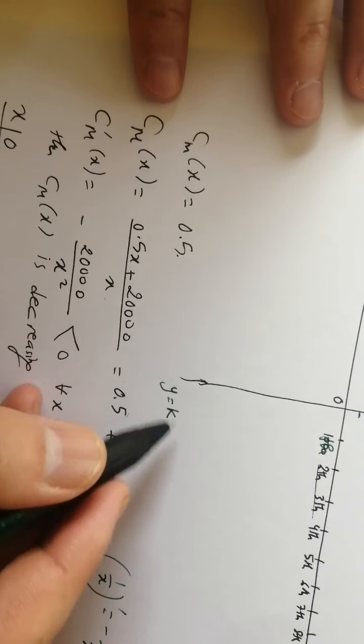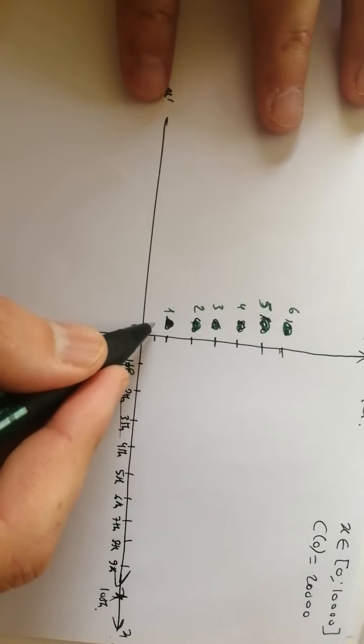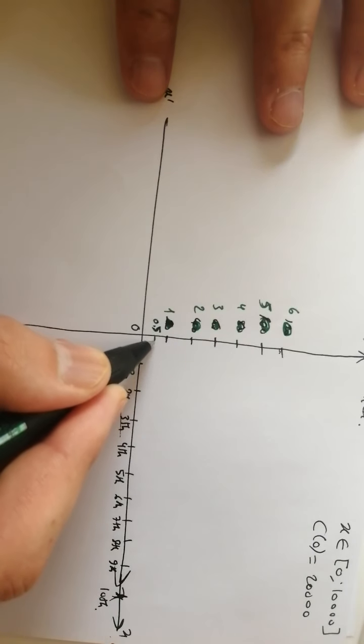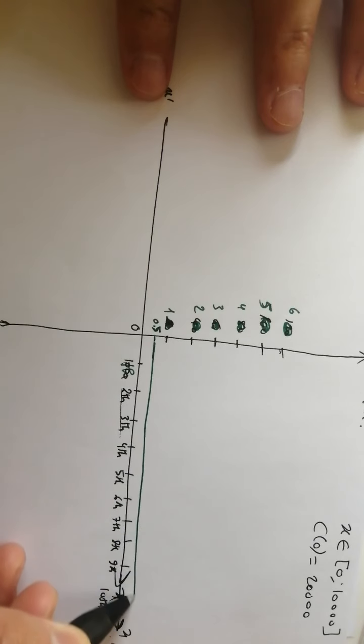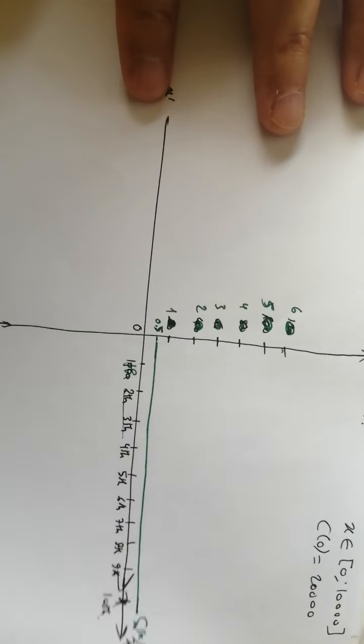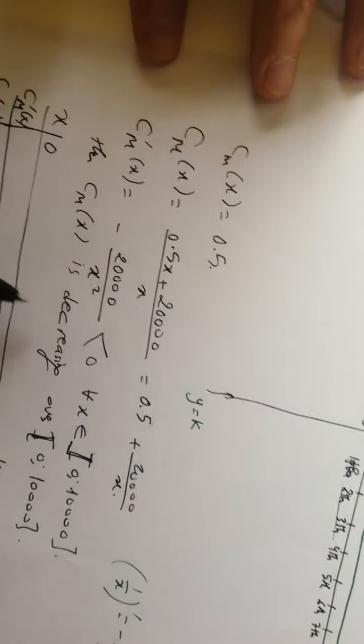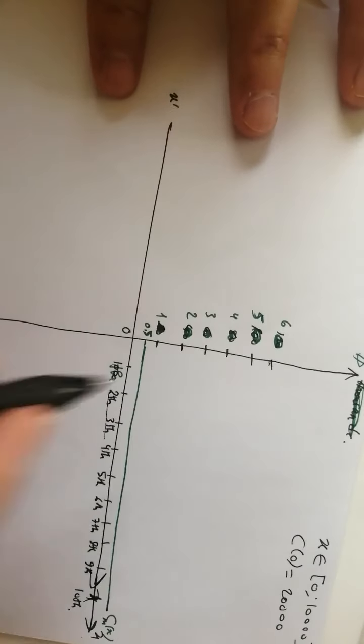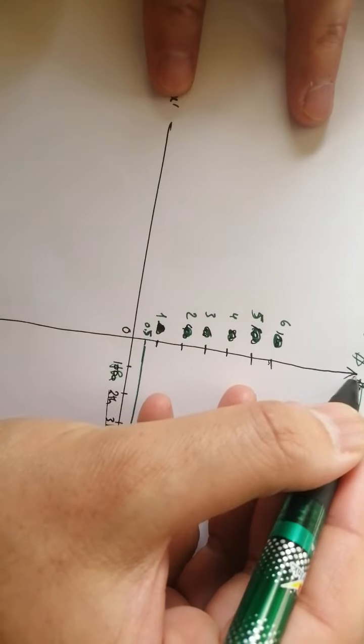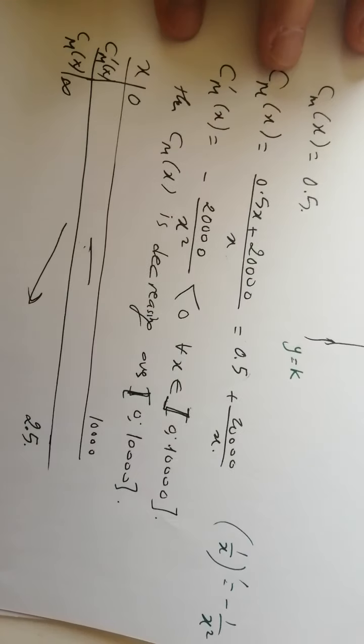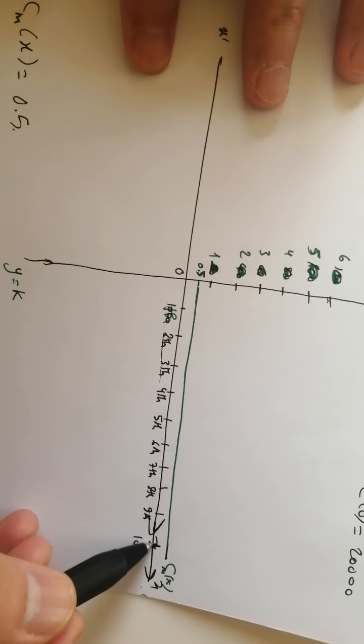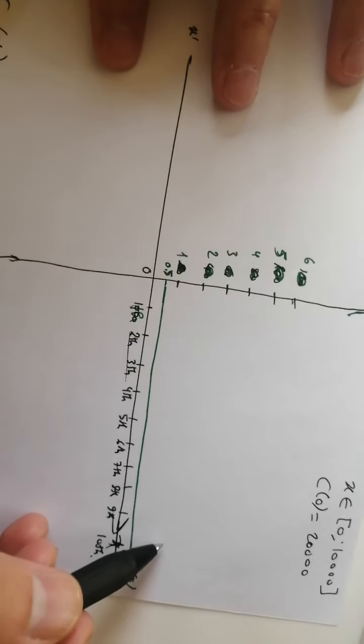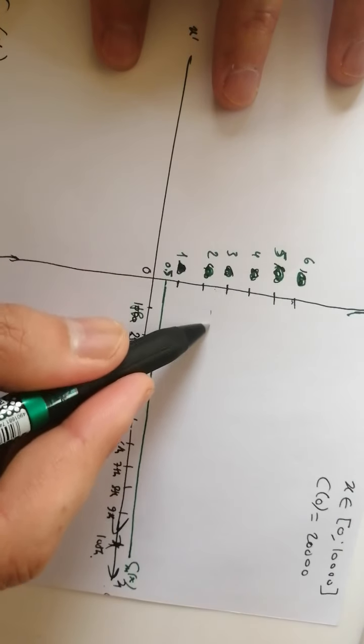This is the marginal cost CM of x, a horizontal line at 0.5. The domain goes from zero to infinity. We're going to start from zero to infinity on the x-axis.